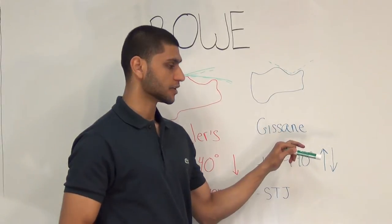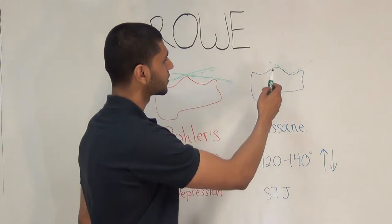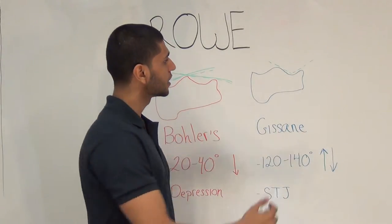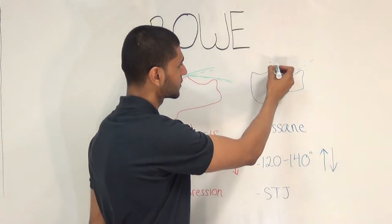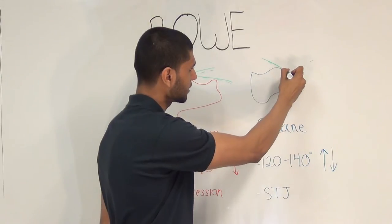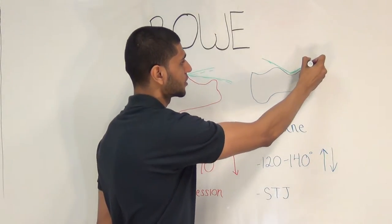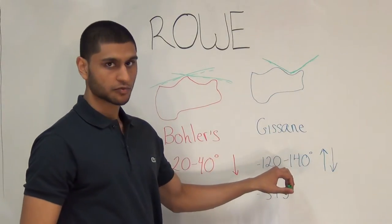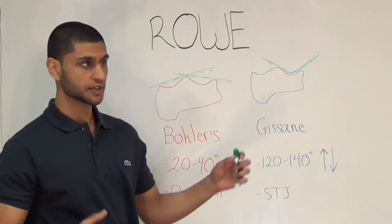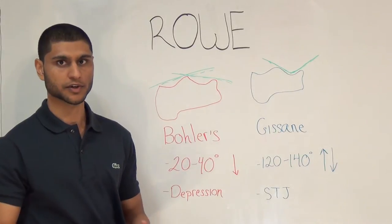The next angle we want to talk about is the critical angle of Gissane, and this one is formed by two lines. The first line begins at the most superior aspect of the posterior subtalar facet and goes right along the lateral border, and the second line runs along the lateral border of the anterior process. Normally, this should be between 120 and 140 degrees. Disruption of this angle means the subtalar joint has been affected, so you have an intra-articular fracture.